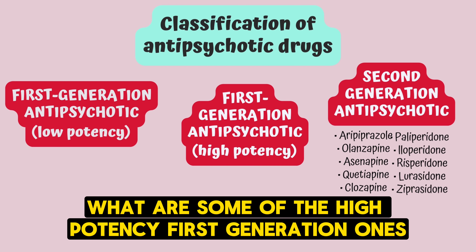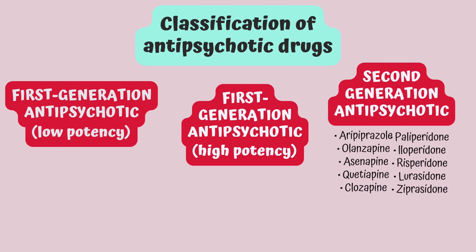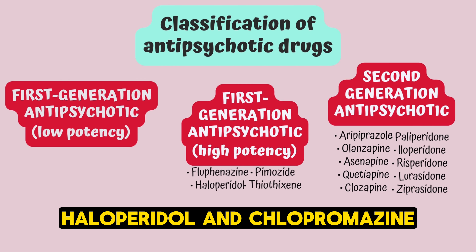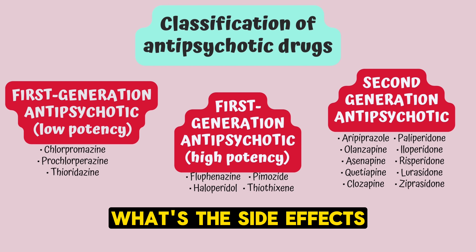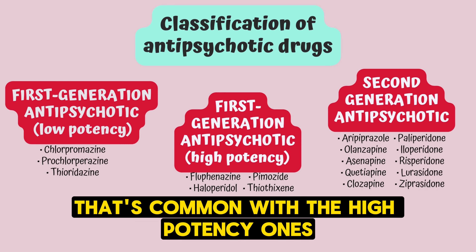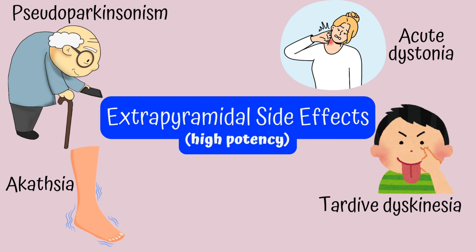What are some of the high-potency first-generation ones? Haloperidol and chlorpromazine. What's the side effect common with the high-potency ones? EPS.